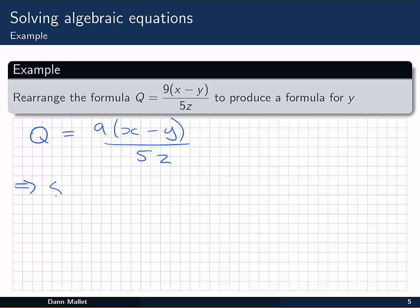So I have 5zQ on the left, 5z over 5z will cancel, leaving me with 9(x minus y) on the right. Now I want to get in at that y to solve for it, so I need to expand those brackets. I leave the left side, 5zQ, and on the right I expand with the distributive law to get 9x minus 9y.